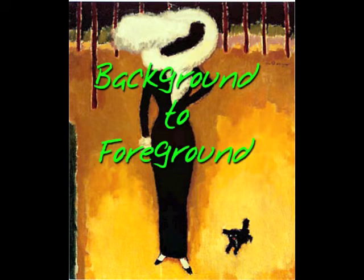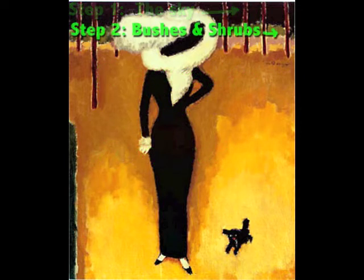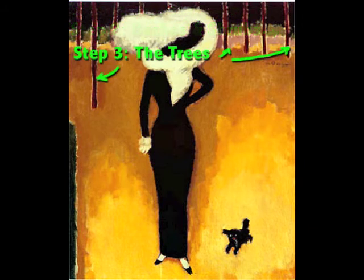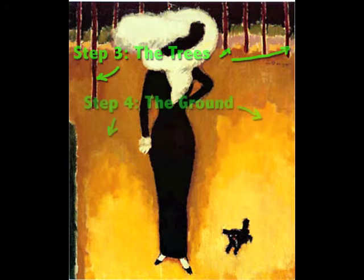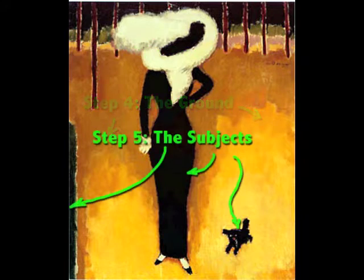If I were to strictly follow the rule of moving from the background to the foreground, then I would start with the black sky in the back, and then I would move to the brushes and shrubs, followed by the trees, then the ground, and then the dark figures in the foreground.